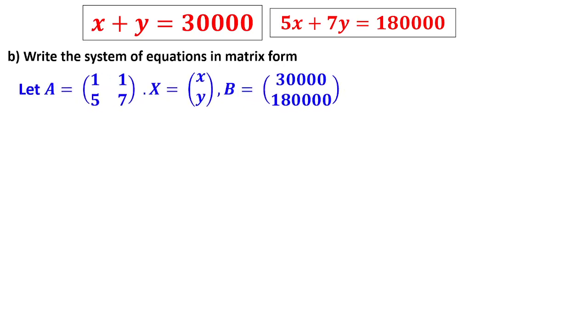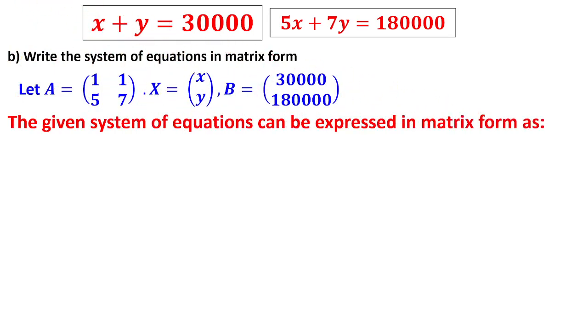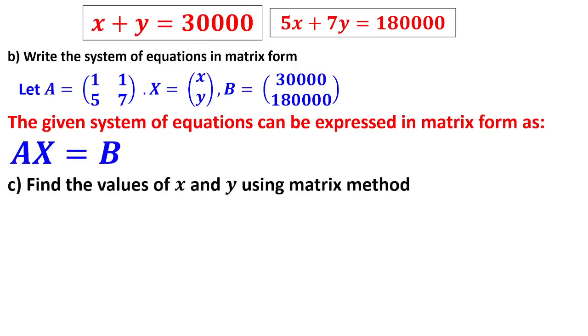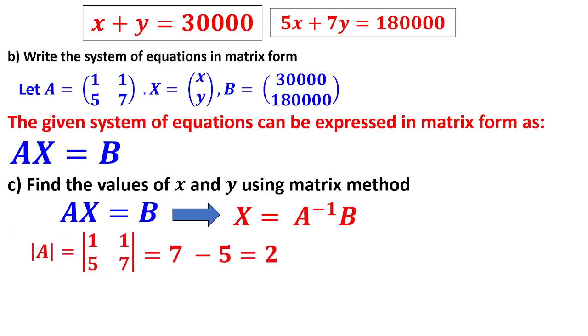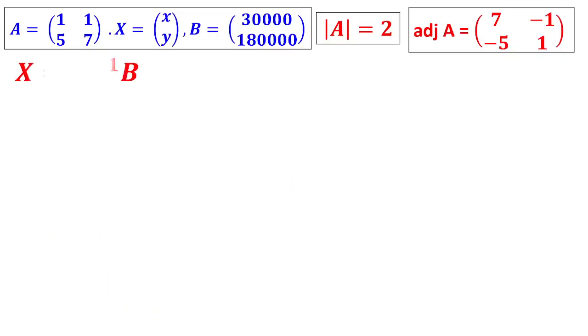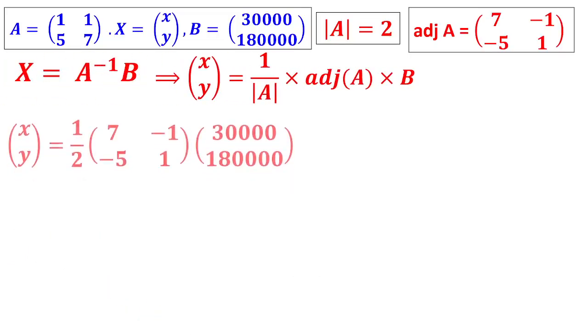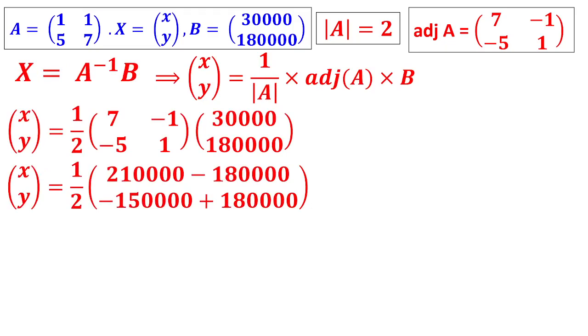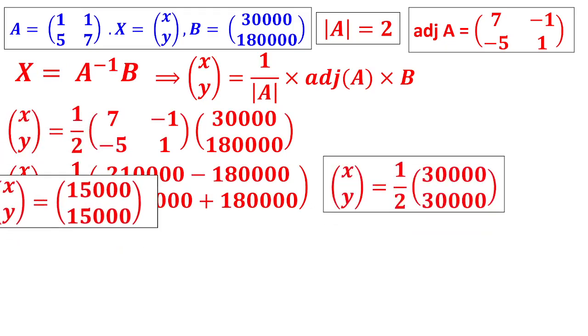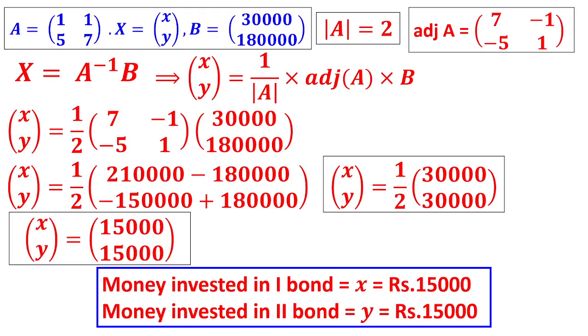Write the system in matrix form. Capital A is the coefficient matrix, X is the variable matrix, and B is the RHS matrix. Find the value of x and y using matrix method. You know how to do it: X equals A inverse B. A inverse is 1 by determinant A into adjoint A. X equals A inverse B is found. After multiplying, you got the answer as 15,000 and 15,000.